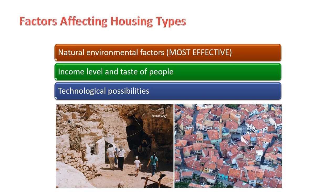6. Cultural and architectural heritage — the cultural identity of a community contributes to the choice of housing materials, with communities often preserving and passing down traditional building methods. 7. Urbanization and modernization — as regions undergo urbanization, there may be a shift towards modern construction materials such as concrete and steel, more pronounced in areas closer to urban centers. 8. Government policies and regulations — building codes and policies can impact the choice of housing materials, with certain materials encouraged or discouraged based on safety, environmental, or aesthetic considerations. 9. Technological advancements — advancements in construction technology can influence the availability and adoption of new materials. 10. Social and community preferences — local preferences and social considerations within a community also play a role; shared preferences may lead to widespread use of certain materials.